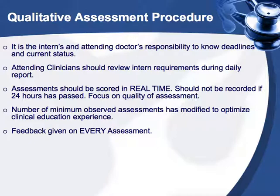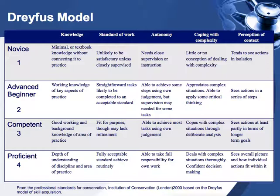How do we score students? We're going to talk about the grading rubric and what each score means. We use the Dreyfus model, which was defined in the Welcome training module. In front of you, you see a chart of the Dreyfus model, which is a scale from 1 to 4. In general terms, a 1 is a novice, a 2 is an advanced beginner, a 3 is a competent student, and a 4 is a proficient student. This model includes individual components of knowledge, standard of work, autonomy, coping with complexity, and perception of the context. Please take a moment to read through this chart and get familiar with each individual component.